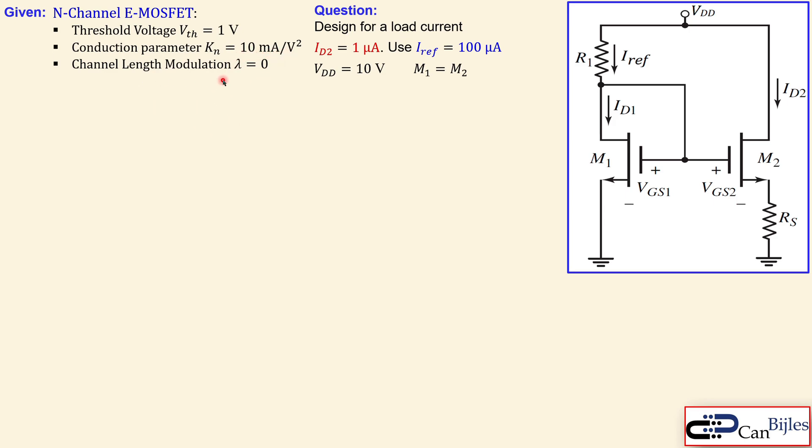The channel length modulation for both transistors is zero. Now we have two resistors R1 and RS as shown here.